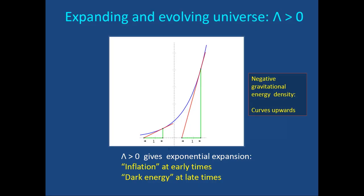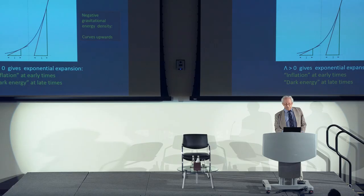If instead we consider only the cosmological constant, we get an exponential expansion — a curve whose slope increases all the time. The negative gravitational energy density represented by the cosmological constant causes the universe to curve up more and more rapidly. This occurs in the actual universe during something called inflation at very early times, and is happening at the present time due to dark energy — so this anti-gravity effect has occurred twice in the universe's history.